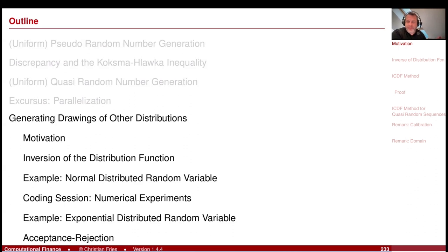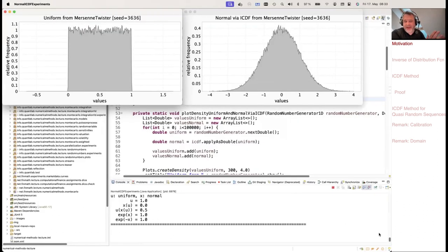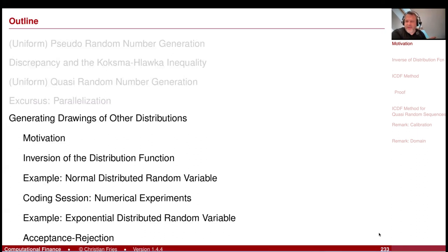Maybe the best example is the normal distribution, and at the end of this section we have some nice code sessions. We will apply this method and transform our uniform distributed sequence to a normal distributed sequence of random numbers. There are also a few subtle aspects in this transformation which link back to our session on computer arithmetic — how the computer represents floating point numbers and how they are associated with the random numbers we generate.